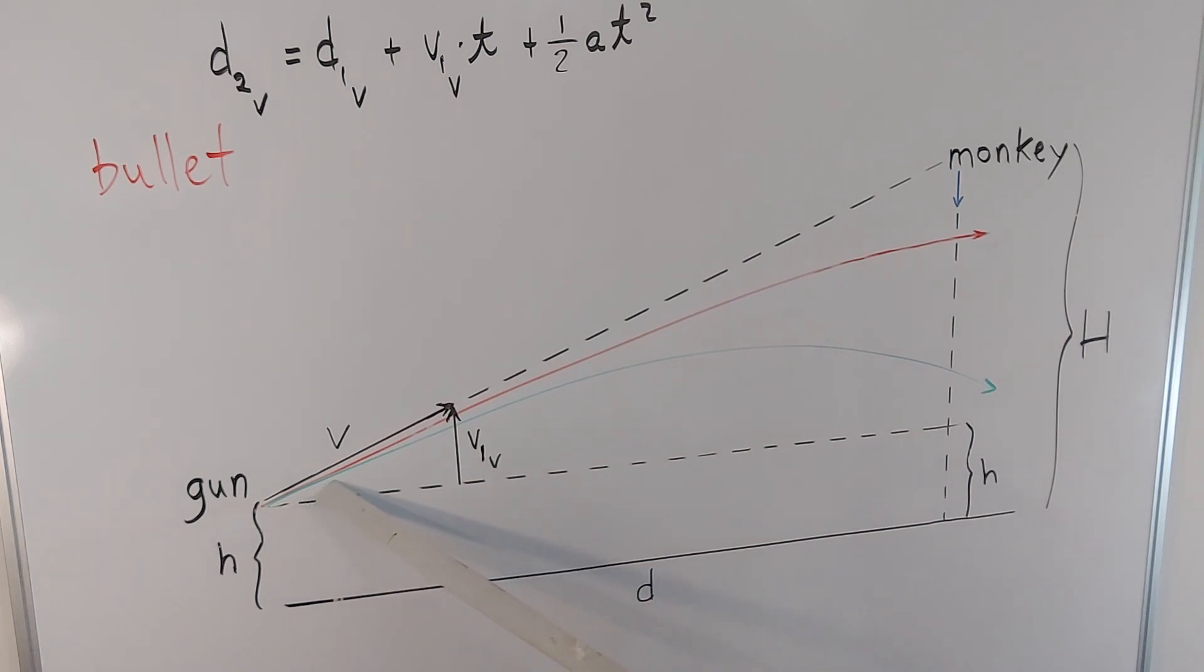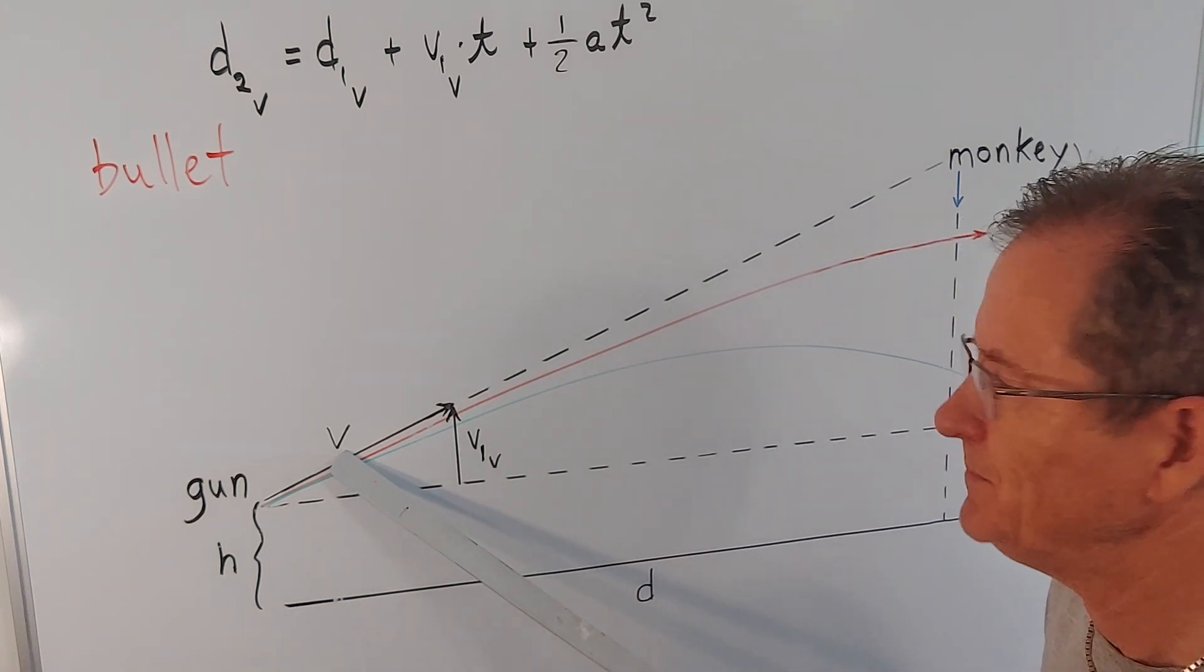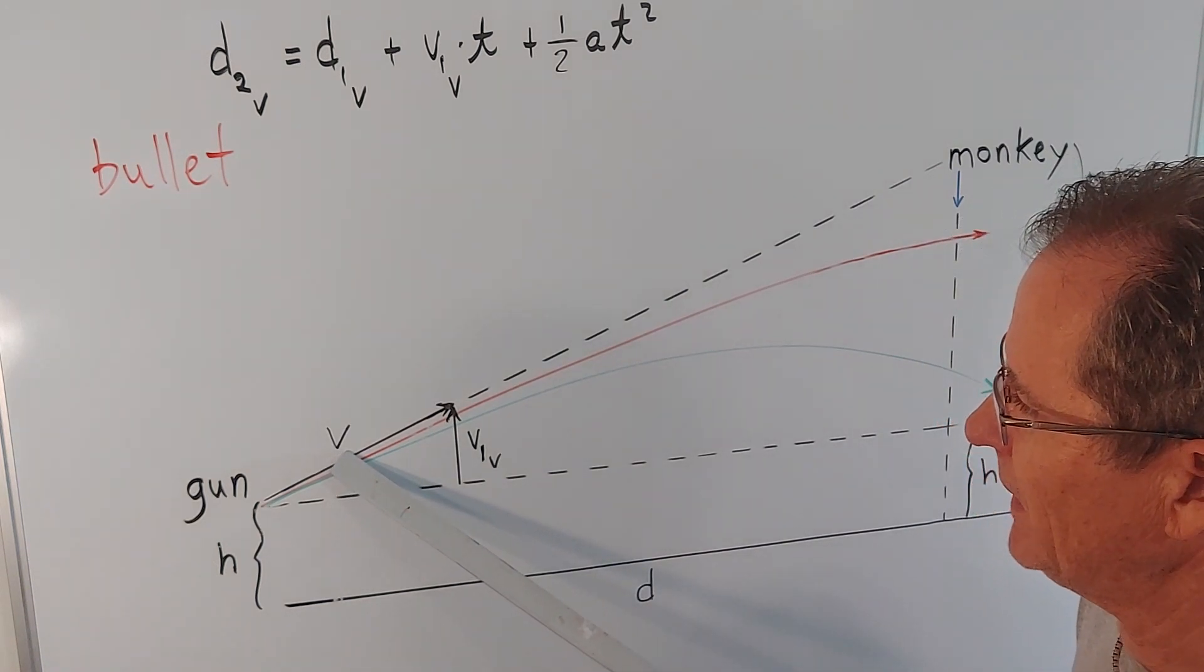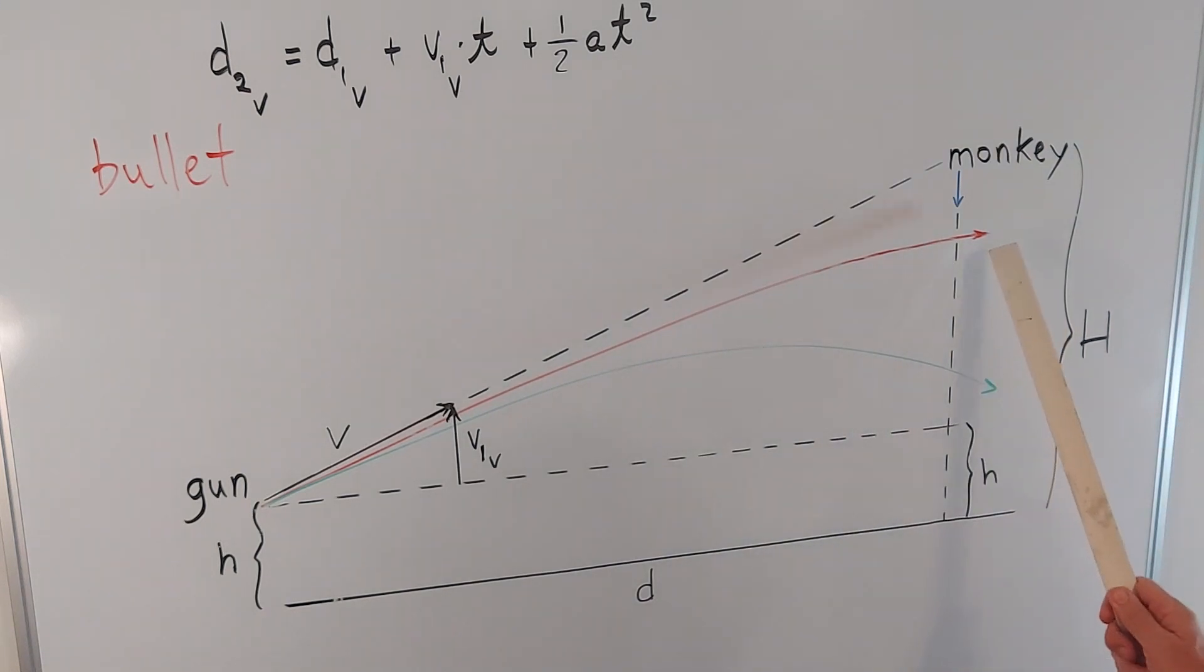Now the bullet can pass below the original height of the monkey on the way up, or it could pass below the original height of the monkey on the way down, depending on the original speed of the bullet. If it's really fast, the bullet will still be on the way up. If it's not so fast, the bullet will be on the way down.